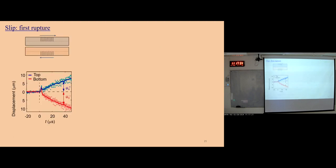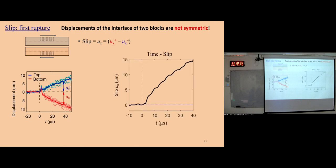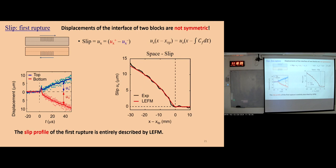In the first few microseconds, this is the measurement of displacement. The blue is the top block and red is the bottom. We find that the displacement at the interface is not symmetric — this highlights the importance of measuring both blocks together. The real slip is the relative displacement between the top and bottom. Here is the time-slip relation. If we transform this to space, we get a figure where the black line is the experimental result and the red line is the LEFM solution from linear elastic fracture mechanics. It shows that the slip profile of the first rupture is entirely described by LEFM.